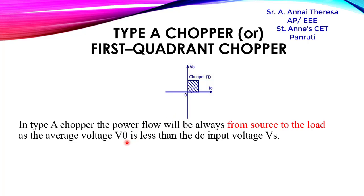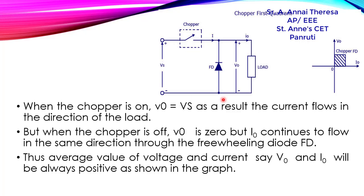The output voltage V0 is always less than the input voltage, so because of this the power will always flow from source to the load. We can now see the operation — when the switch is on, what is the working condition, and when the switch is off, what is the working condition.